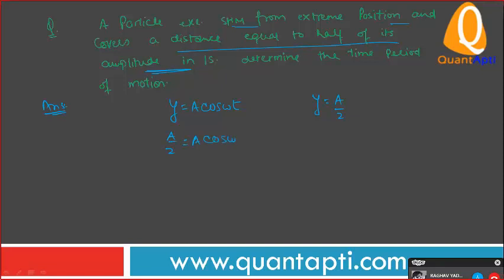The maximum position and the covered distance equal to half of its amplitude. Then Y equals A by 2, half of A. Very good. Now tell me fast the angle. Anyone. Half is cos pi by 3. Pi by 3. Cos omega T.